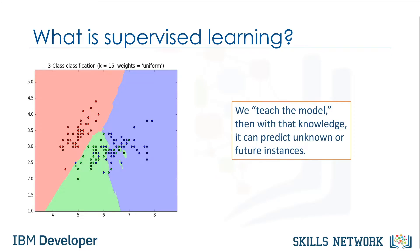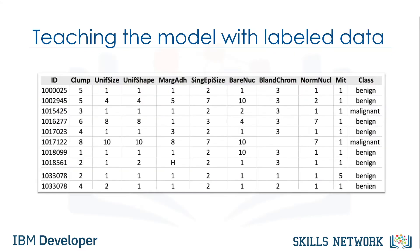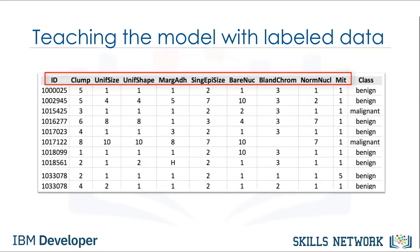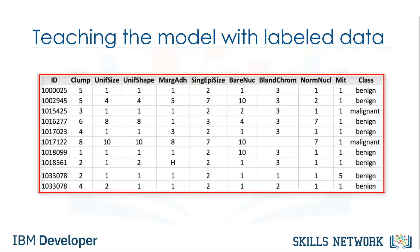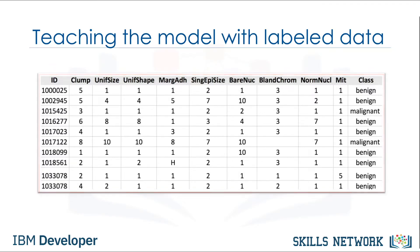But this leads to the next question: how exactly do we teach a model? We teach the model by training it with some data from a labeled dataset. It's important to note that the data is labeled. And what does a labeled dataset look like? Well, it could look something like this. This example is taken from the cancer dataset. As you can see, we have some historical data for patients, and we already know the class of each row.